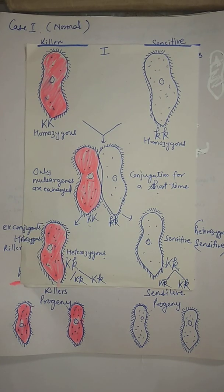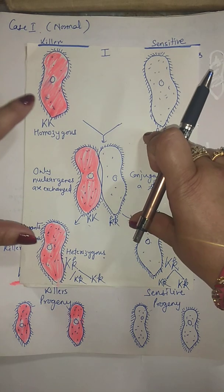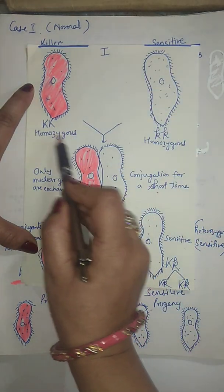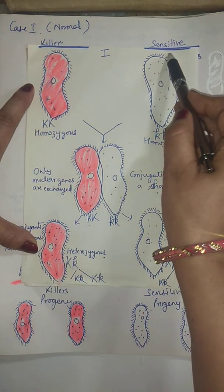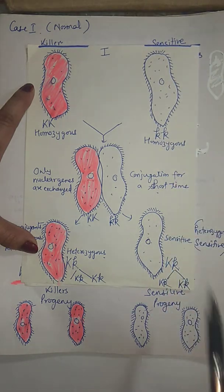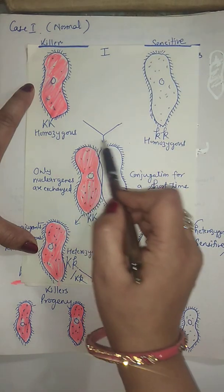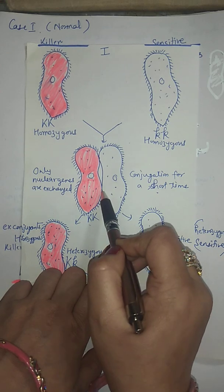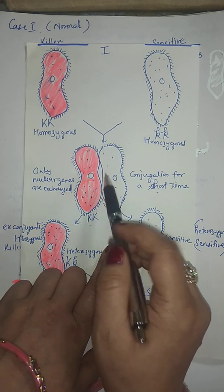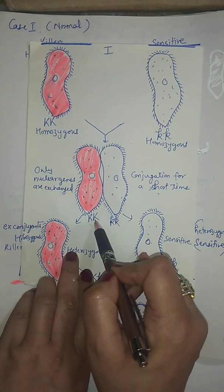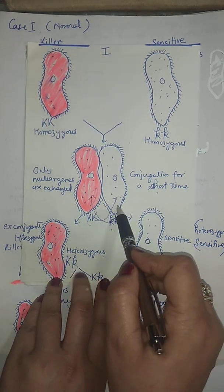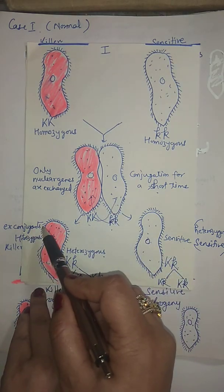The phenomenon of cytoplasmic inheritance can be explained by two cases observed by Sonborn. In case one, a killer strain homozygous KK mates with a sensitive strain homozygous kk. They come close, conjugate, lying side by side, and the pellicle and cell membrane dissolve, allowing exchange of nuclear genes. K is exchanged to the sensitive side and small k to the killer side.